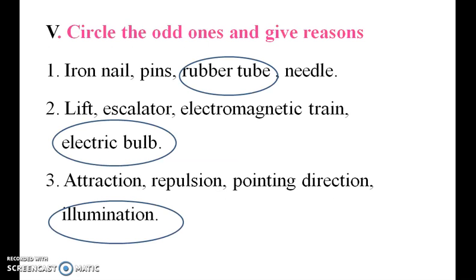Circle the odd ones and give a reason. Given items: iron nail, pin, rubber tube, needle. Iron nail, pins, and needle are magnetic materials. Rubber tube is a non-magnetic material, so rubber tube is the odd one.